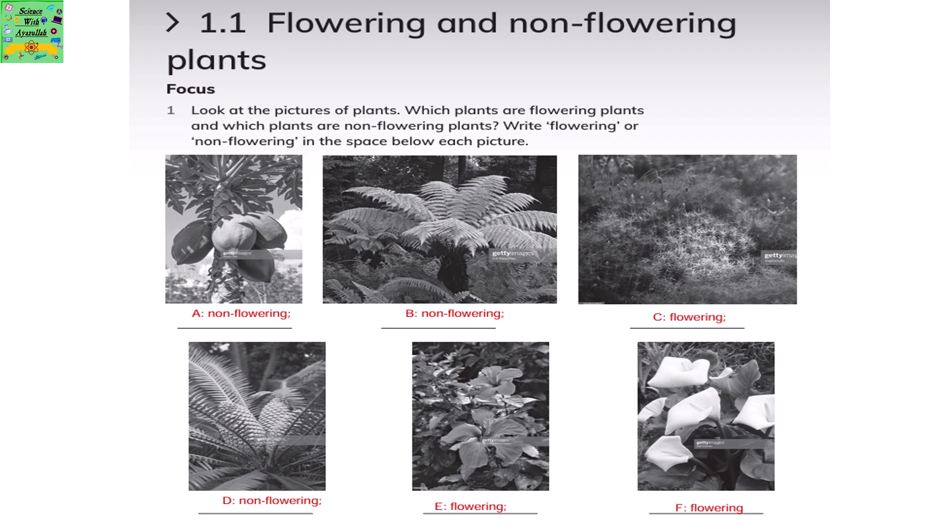Write flowering or non-flowering in the space given below. The first one is a non-flowering plant, the second is also non-flowering, the third is flowering, the fourth is non-flowering, the fifth is flowering, and the sixth one is also flowering.